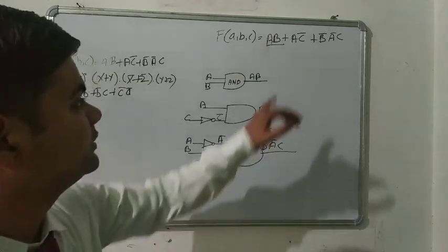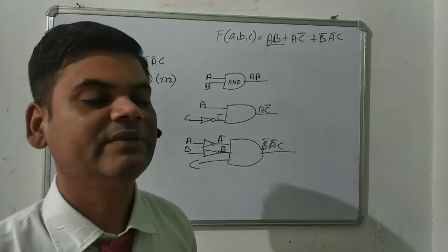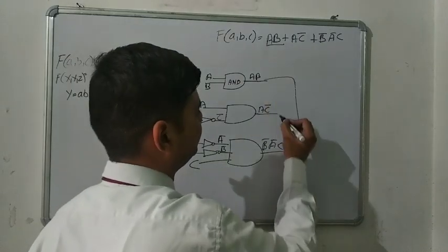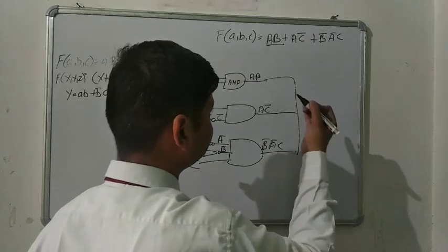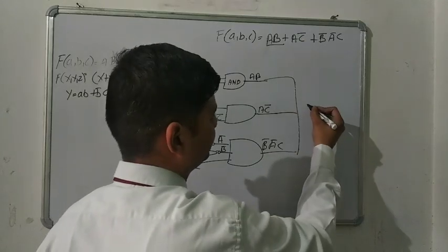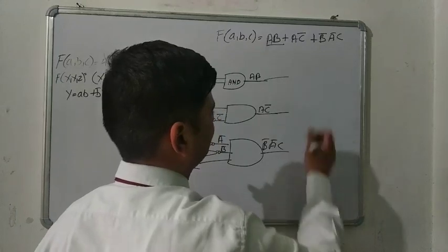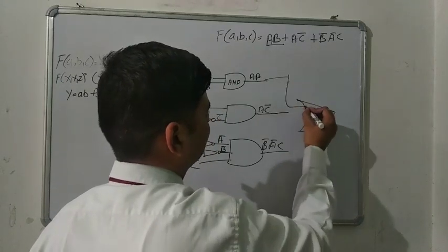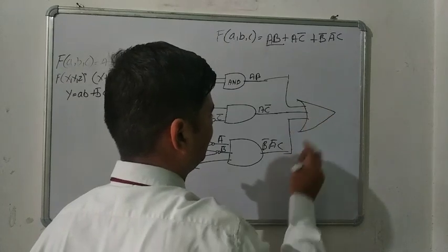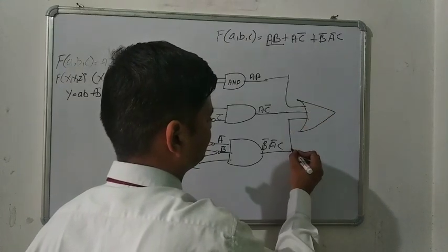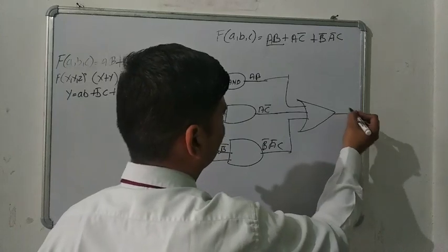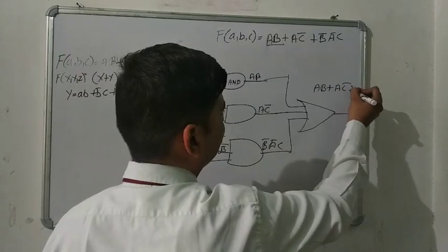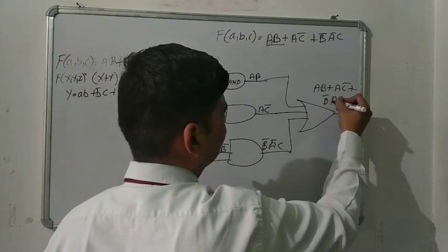At the end of this AND gate we find the value of B̄ĀC. Then on all three terms we are using the plus sign. Plus sign means we are using the OR gate. So we have to connect all three gates to the OR gate. The OR gate adds all three things — AB plus AC̄ plus B̄ĀC.